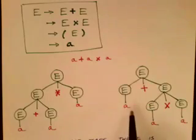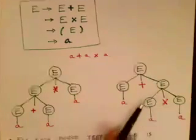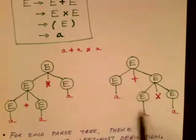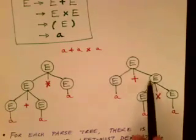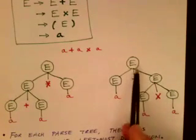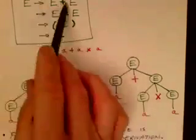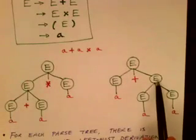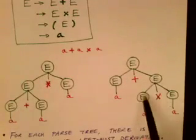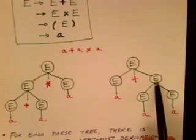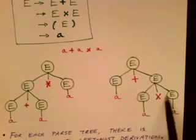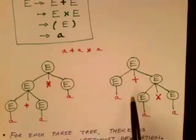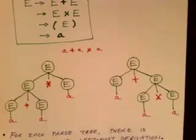Over here, we have a different parse tree for the same string A plus A times A. But in this case, we used the first rule first — E goes to E plus E — and then we expanded the second E using the second rule, E goes to E times E. So we see two different parse trees for the same string of terminals.